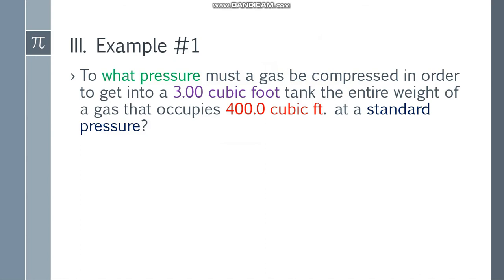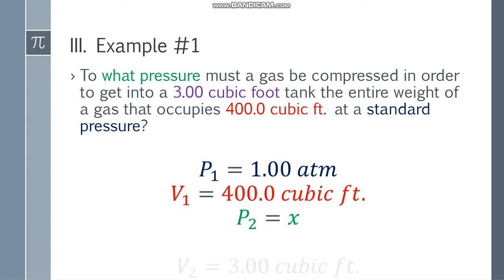Let's start with the first example. To what pressure must a gas be compressed in order to get into a 3.00 cubic foot tank, the entire weight of a gas that occupies 400.0 cubic feet at the standard pressure? Let's have the given: P1 is equal to 1.00 atm, that's the standard pressure. I chose 1 atm because it's easy to multiply and divide by 1.